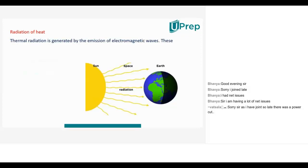In the case of convection currents — land breeze and sea breeze — medium is definitely there. Medium is required for both conduction and convection processes. Now let us attempt a question: land and sea breezes are based on which process? There are four options — A, B, C, D — the phenomenon of convection of heat being one of them.